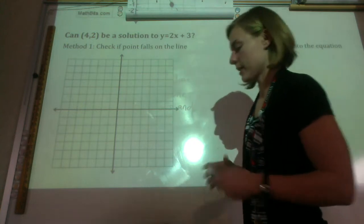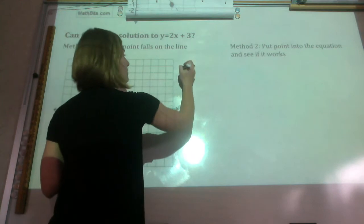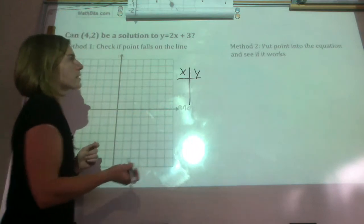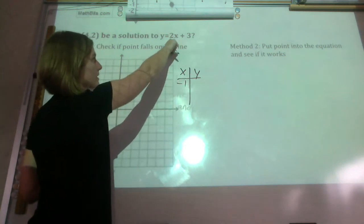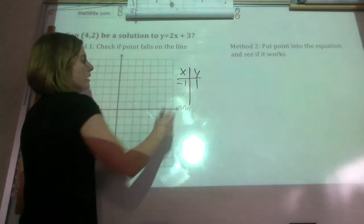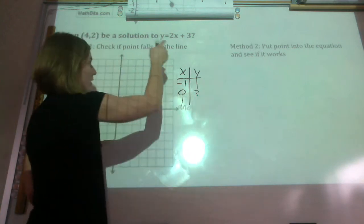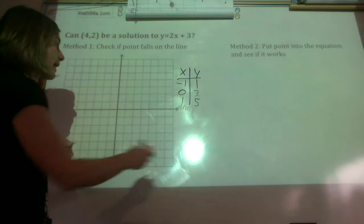So let's start with the first one. So let's graph this line. If we're going to graph it, we need ourselves a t-table. So x and y. I'm going to choose simple points. So maybe x is -1. If x is -1, that becomes -2 plus 3 is positive 1. If I put in 0, that just is 3. If I put in positive 1, that is 5. So now we have those points.